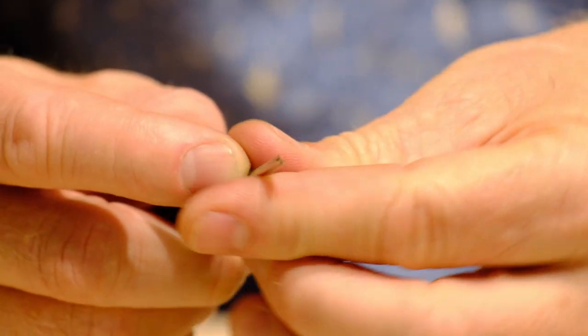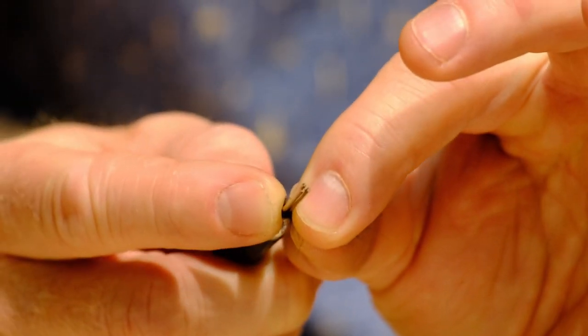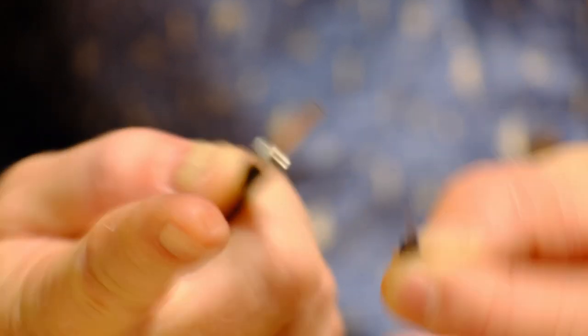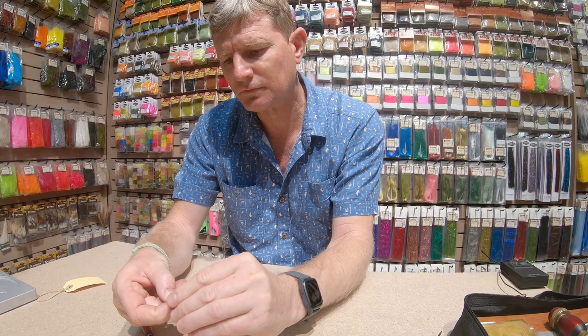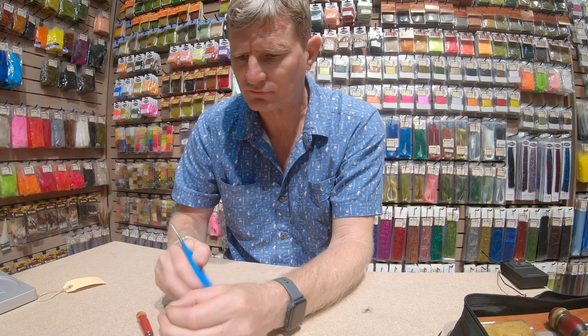Once you're happy with your gathering, nip them in your left hand and in a smooth motion slide the stem of the CDC off the tool. You're left with a nice neat bunch of fibers.